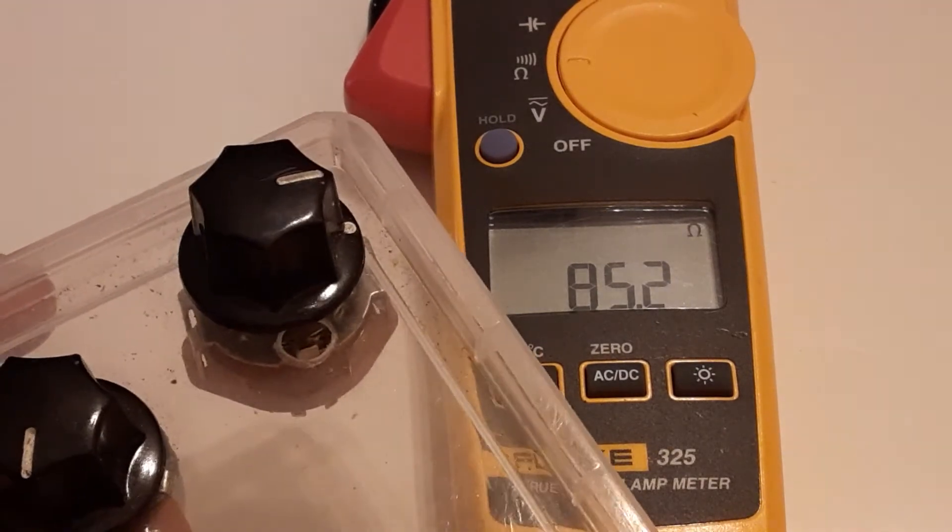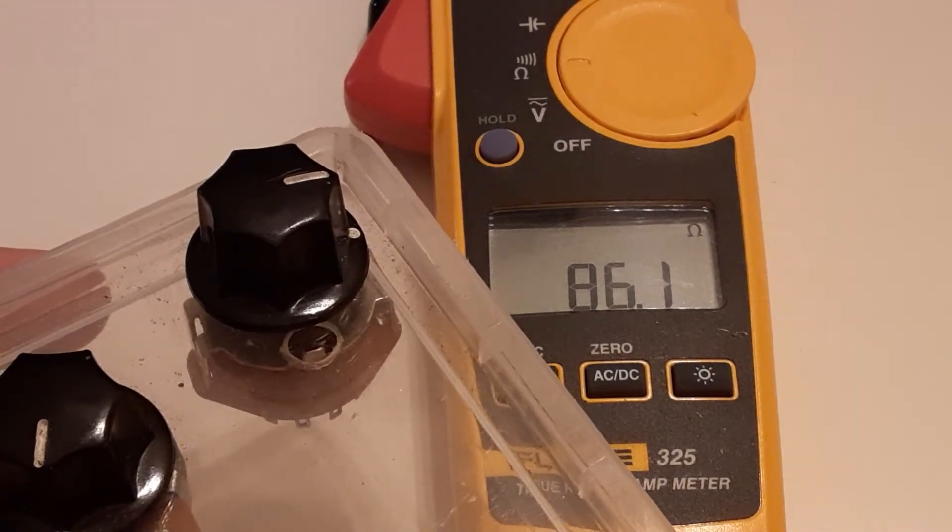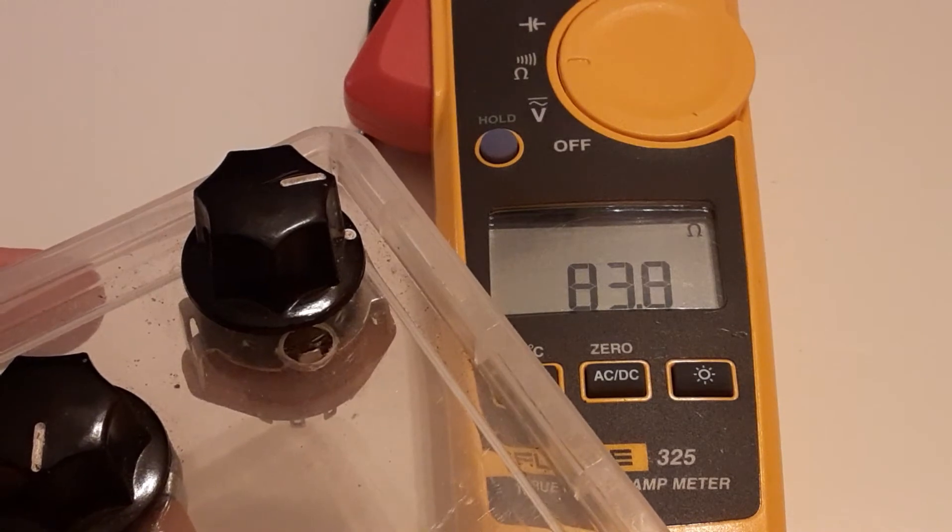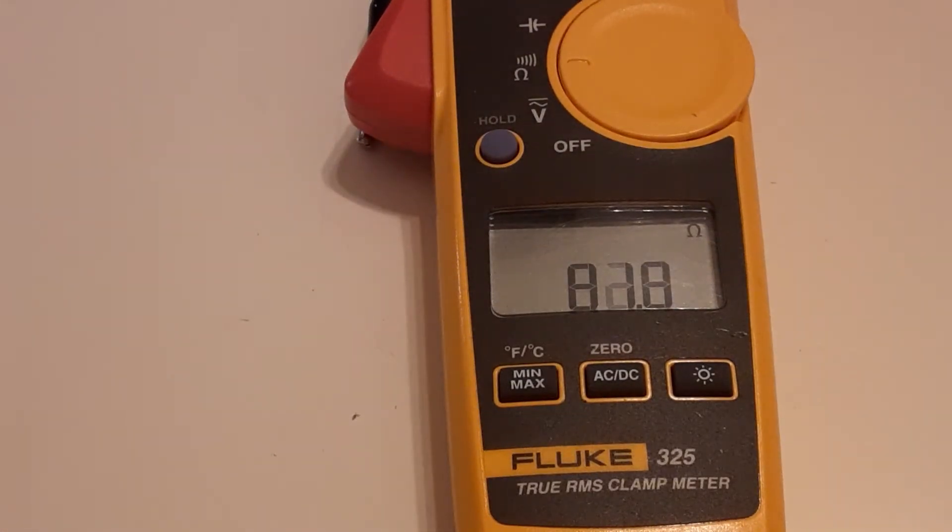This meter has an auto range function. If it senses anything below 30, it thinks it's continuity and starts to beep. If I had a meter with a resistance range on it, it would just go down to zero and wouldn't beep at me. But anyway, that's how you measure resistors, just simple fixed resistors, or also how you measure a potentiometer resistance.